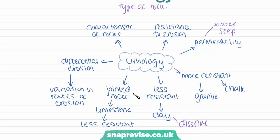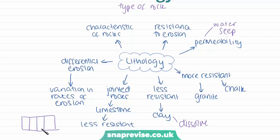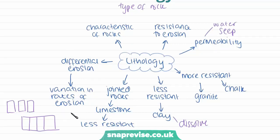Also, the factor of jointed rocks — rocks that have jointed bedding planes, meaning it's not just one mass of rock. Rocks such as limestone have bedding planes, which are natural fractures within the rock. These fractures are less resistant to erosion, so we often get big chunks of rock breaking off at these bedding planes. All these factors show that we have differential rates of erosion — a variation in the rates of erosion in different types of rocks due to their characteristics.